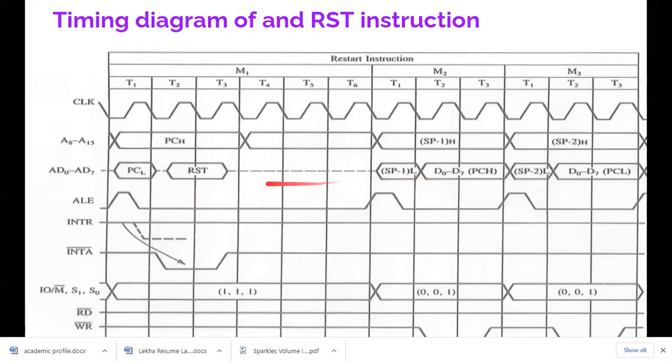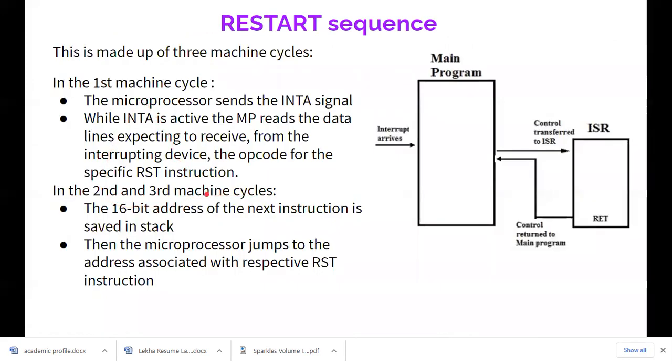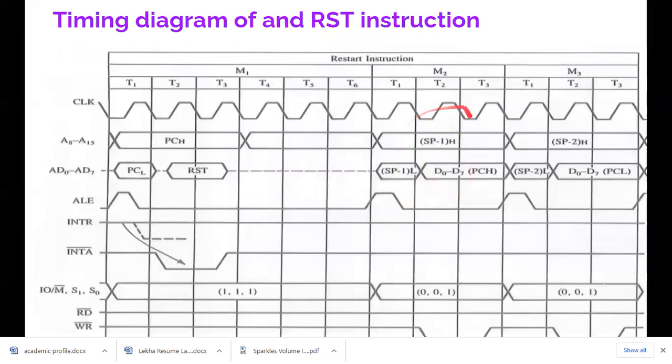By the time in the second and third machine cycles, the 16-bit address, the next location, will be saved in the stack. In M2, the higher order is placed on the A8 to A15 stack, then the A0 to A7, the lower order is placed.